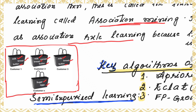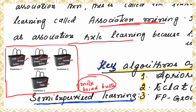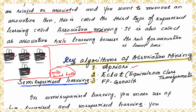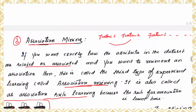The association learned is: if a customer is buying milk, the customer is also buying bread and butter. This way, the supermarket can always keep sufficient stock of such items. Key algorithms of association mining are the Apriori algorithm, Eclat (Equivalence Class Transformation), and FP-Growth.